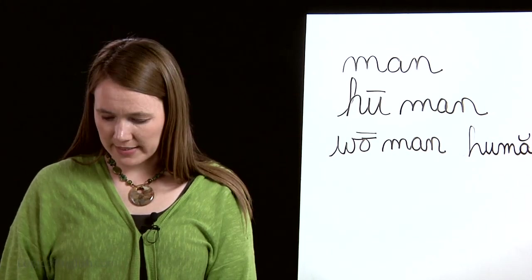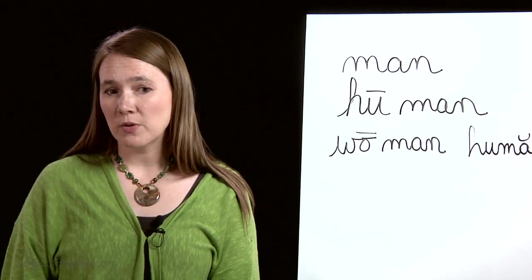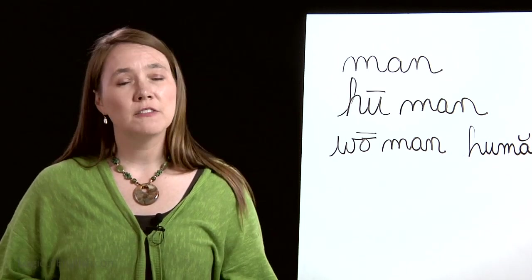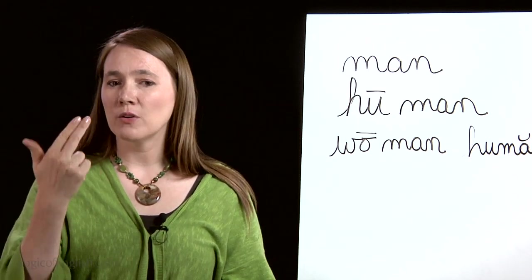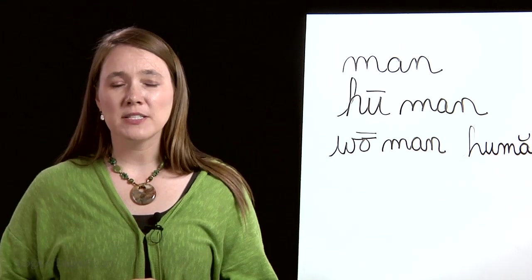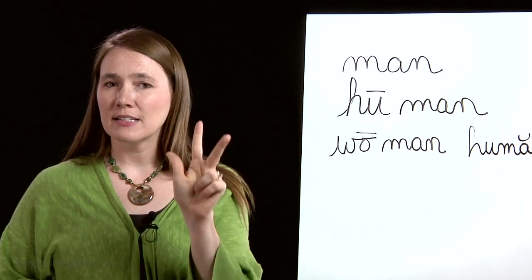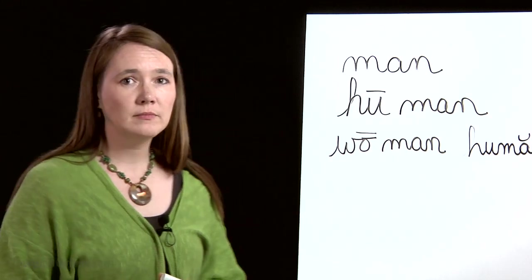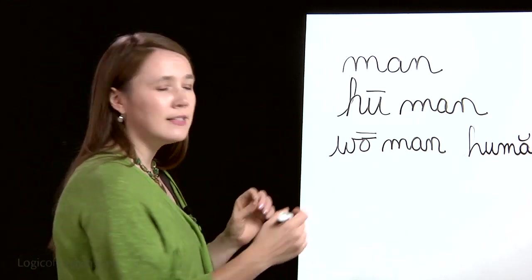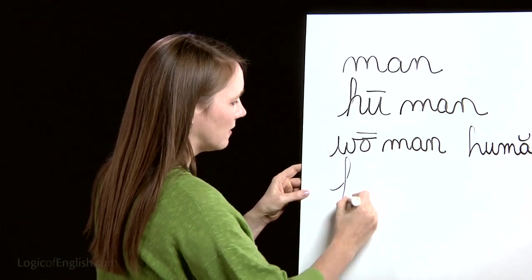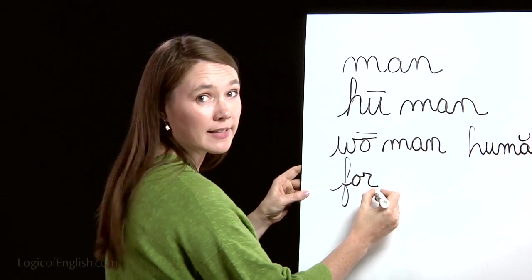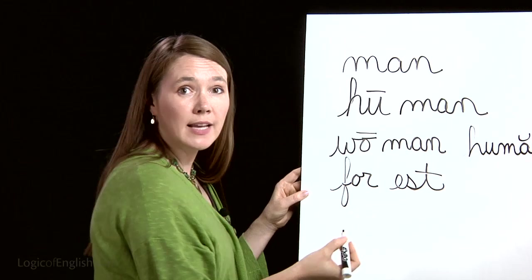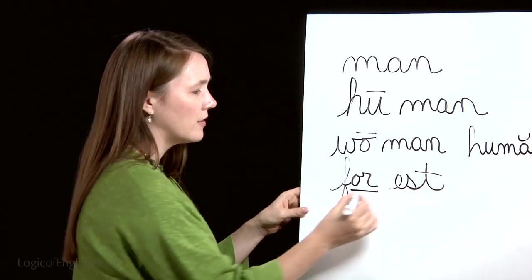The ninth word is 'forest.' They walked through the forest. How many syllables in 'for-est'? Two. The first syllable is 'for,' F-OR. The second syllable is 'est,' E-S-T. Go ahead and write it. F-OR, second syllable is 'est.' And how will we mark it? We'll underline the 'or.'